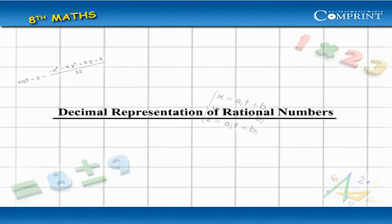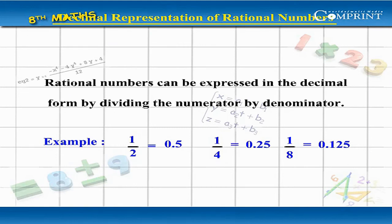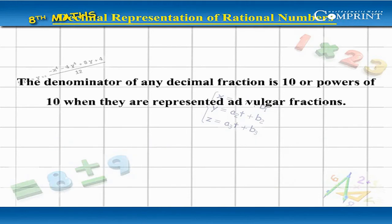Decimal Representation of Rational Numbers. Rational numbers can be expressed in decimal form by dividing the numerator by denominator. For example: 1/2 = 0.5, 1/4 = 0.25, 1/8 = 0.125, 7/5 = 1.4, and 263/125 = 2.104.